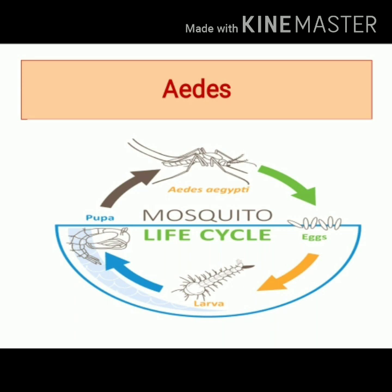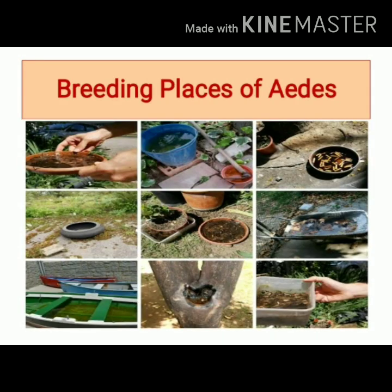The pupal stage is a resting stage and this stage remains for 1 to 2 days. Please note the resting position of the Aedes Mosquito. The adult Aedes Mosquito is a day biter. It prefers to bite during daytime and its flight range is less than 100 meters. What are the different breeding places of the Aedes Mosquito?